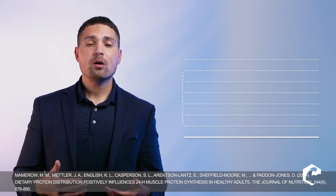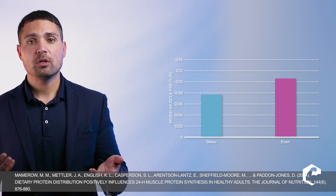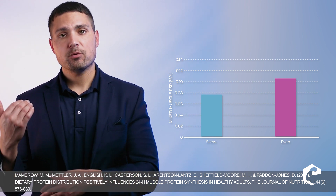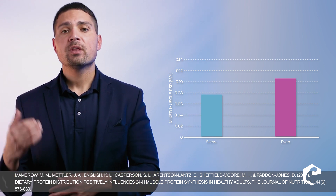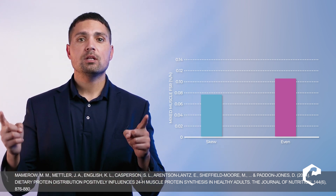Fairly recent research done in conjunction with Dr. Donald Layman and the late Patton Jones took individuals and had them consume 90 grams of protein on a skewed distribution — 10, 20, and 60 grams — and on another occasion gave them 30 grams in the morning, 30 grams in the afternoon, and 30 grams at night.